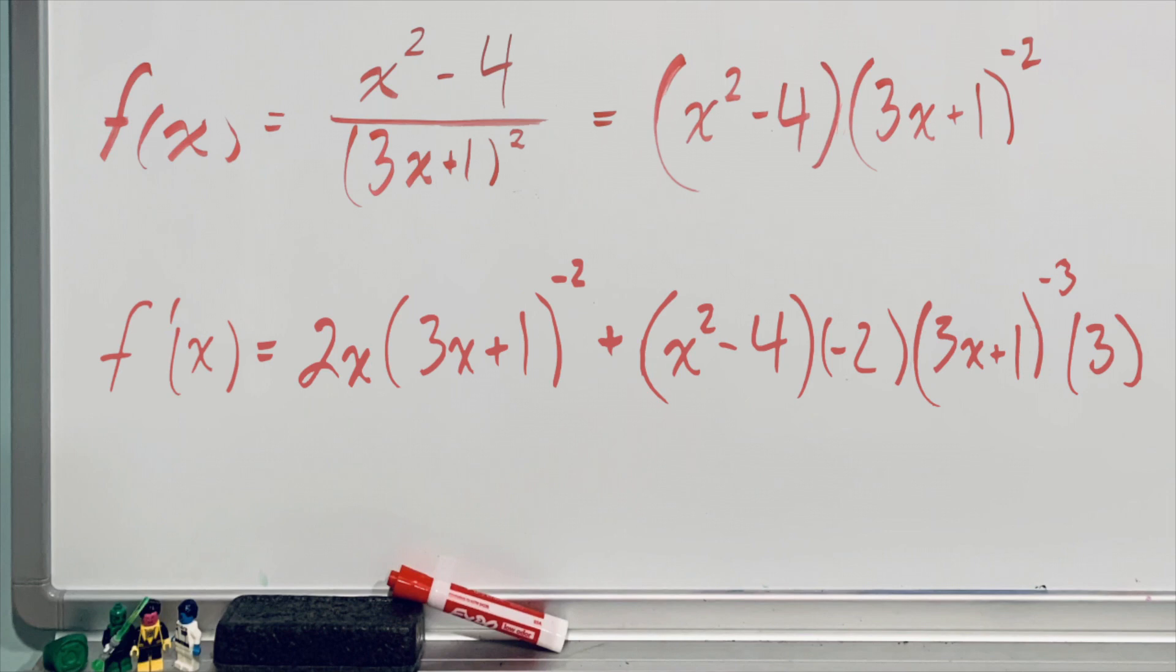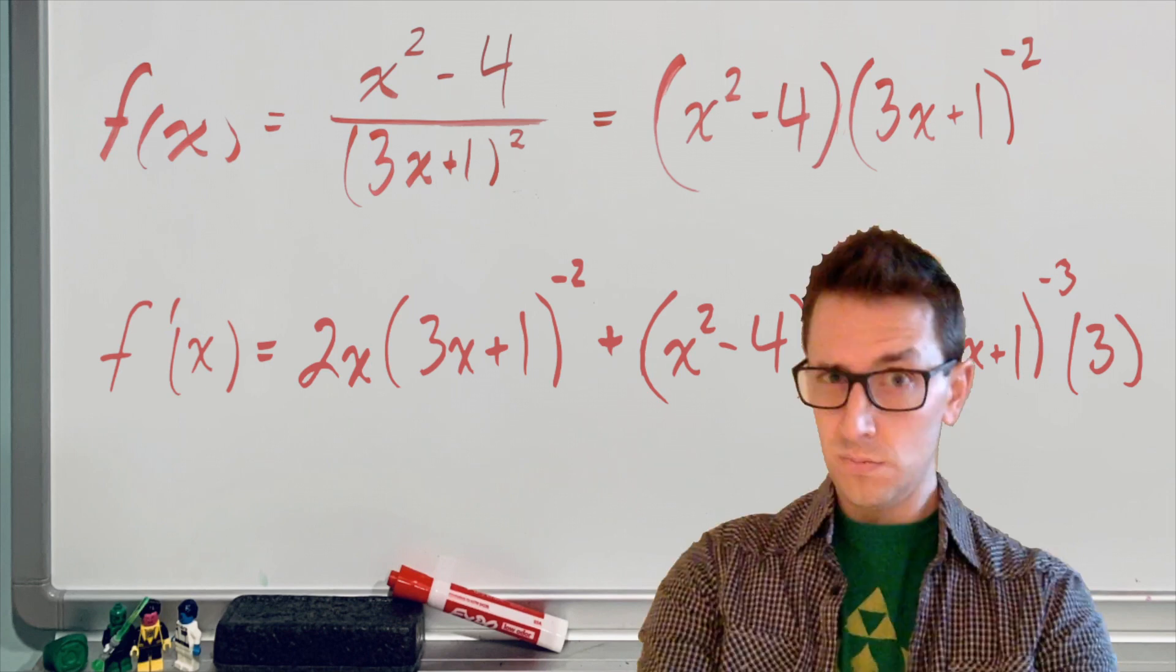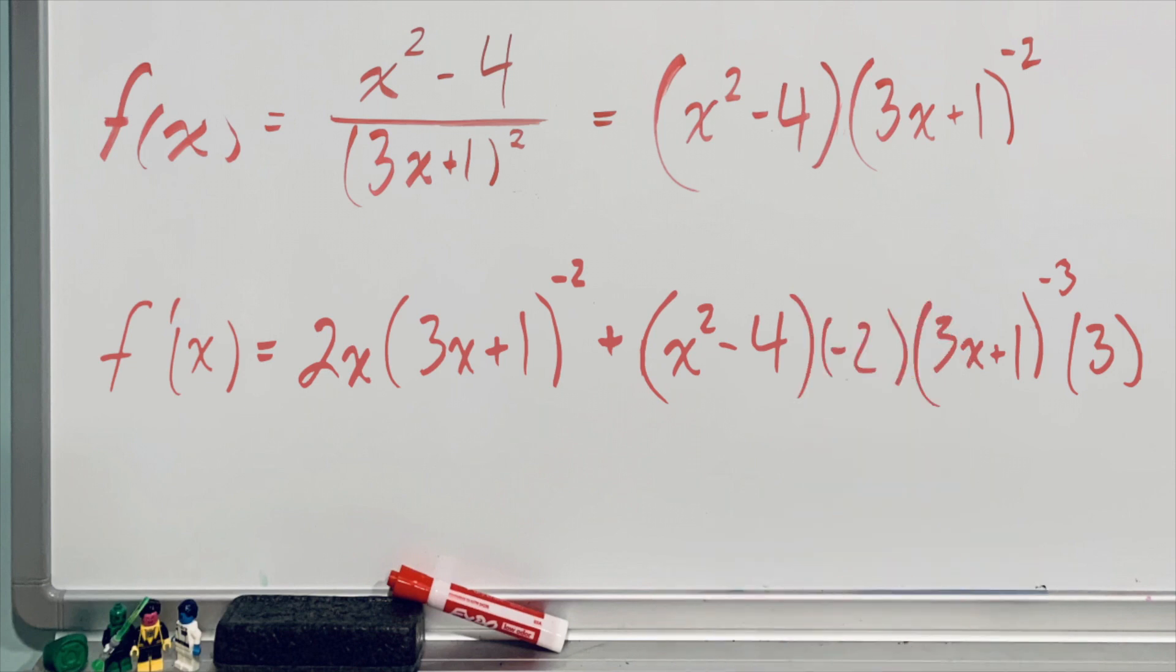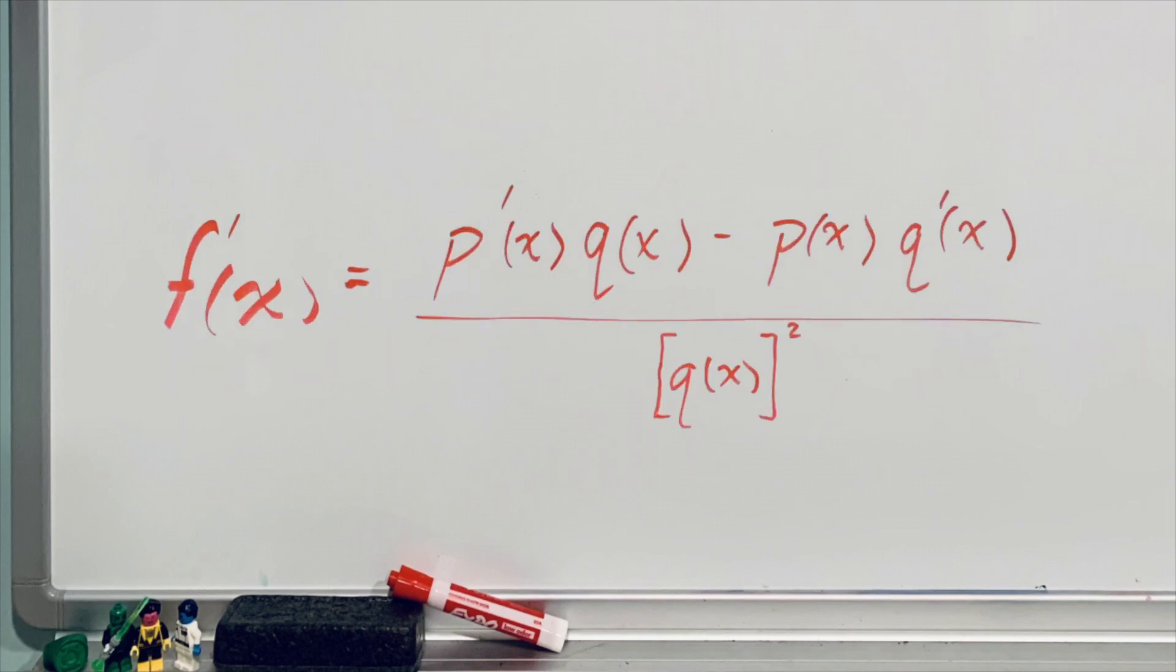So after applying the product rule and the chain rule, but not the quotient rule, we arrive at this monster of a derivative. Now I won't go over how to simplify this expression in this video, but if you do, you will get the same result as if you applied the quotient rule. You can apply this process to any function that is the quotient of two other functions to never use the quotient rule again.